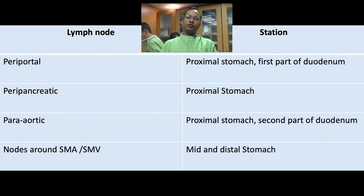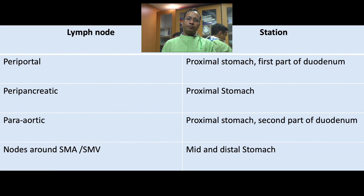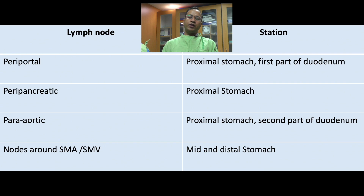Today we are going to demonstrate how we can evaluate various abdominal lymph nodes with endoscopic ultrasound. We will learn how to focus on periportal, peripancreatic, and aortocaval lymph nodes.